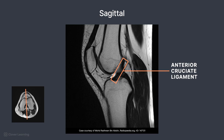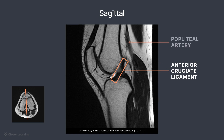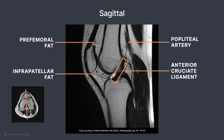One way to remember this is: if you were to draw a capital A, a straight line would first be drawn, somewhat shaped like the ACL. On the posterior side, the popliteal artery is demonstrated. Infrapatellar fat and the pre-femoral fat body are located near the patella.